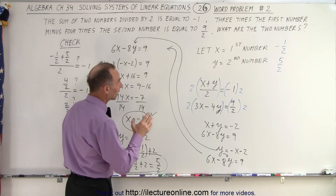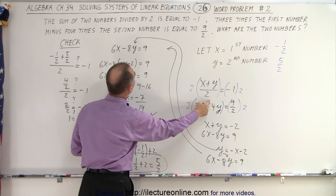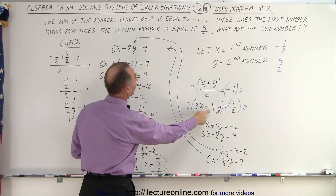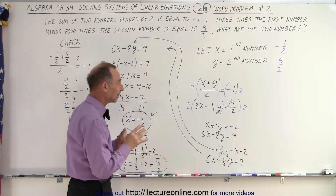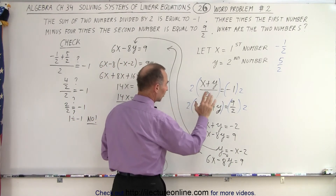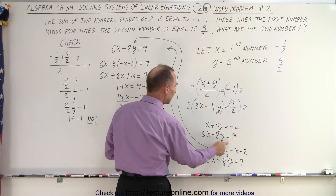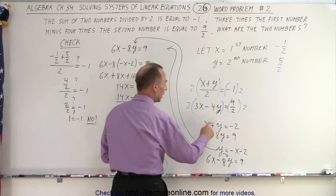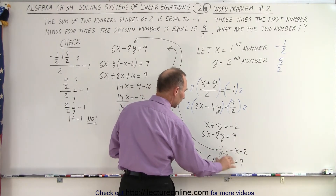We have two numbers, x and y. It says the sum of the two numbers: x plus y divided by 2 is equal to negative 1. And 3 times the first number minus 4 times the second number equals 9 over 2. We copied the two equations correctly. We multiplied both sides by 2 to get rid of fractions: x plus y equals negative 2, and 6x minus 8y equals 9. That looks okay. Next, we moved x to the other side, getting y equals negative x minus 2.